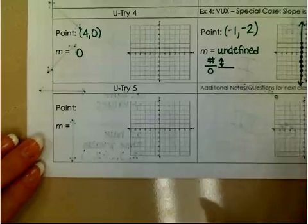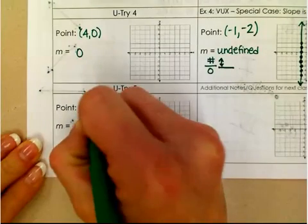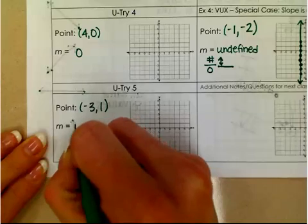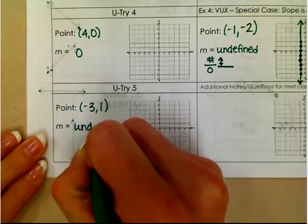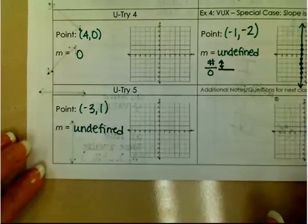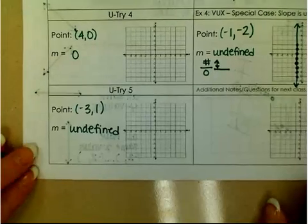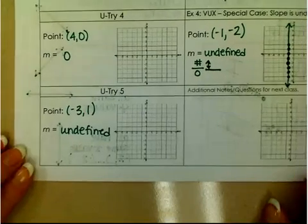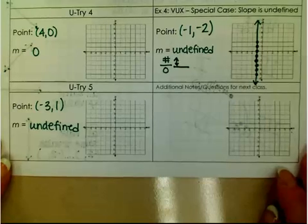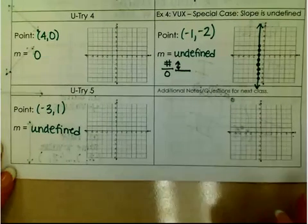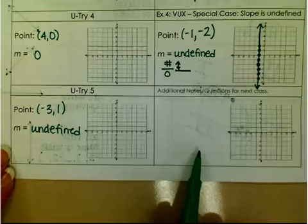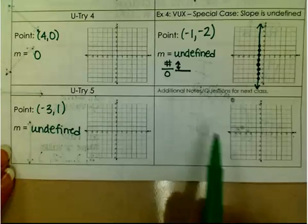You try 5: use the point (−3, 1) and a slope that is undefined. Graph that point, use the slope to graph the rest of the line, and then complete your knowledge check. Don't forget to write any additional questions you might have for next class in the box.